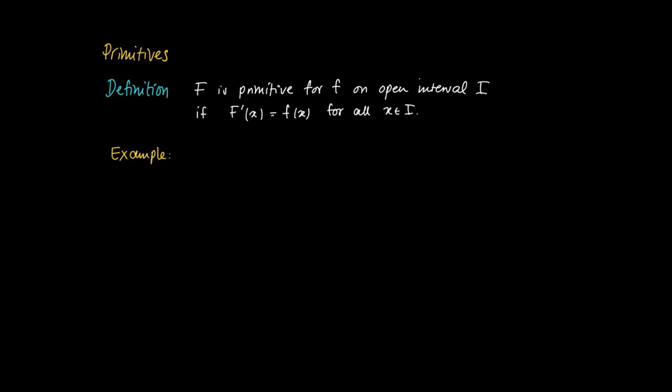Here for example, if we take F(x) = x², then this function is a primitive for f(x) = 2x, since the derivative of capital F equals 2x. So capital F is called a primitive for f, and this holds for any open interval in ℝ, and more specifically we could also take I = ℝ.